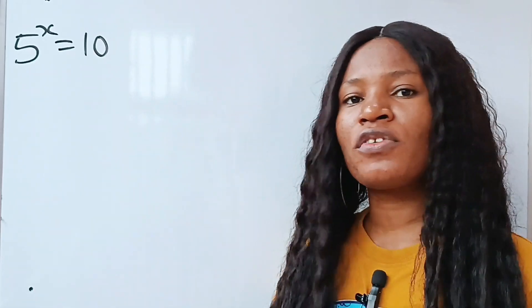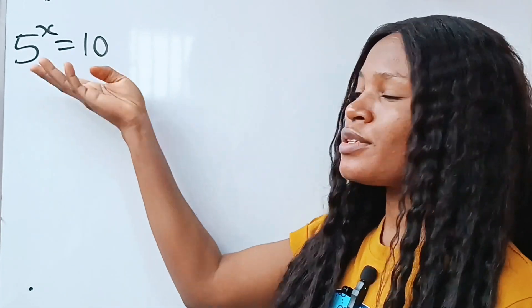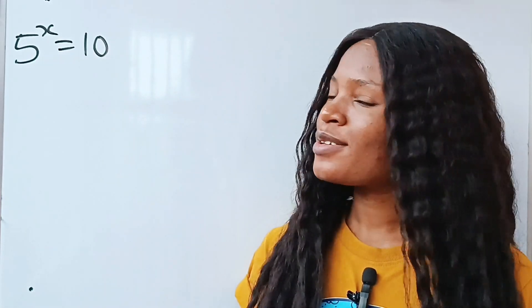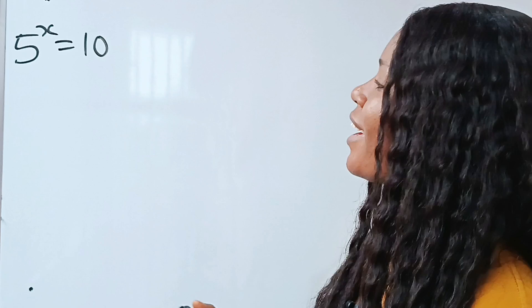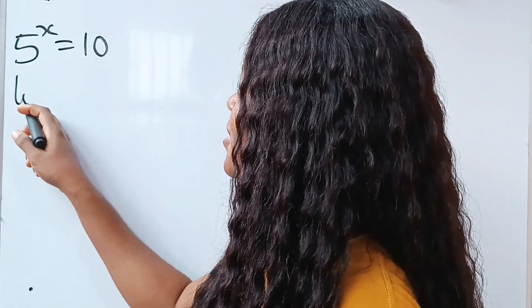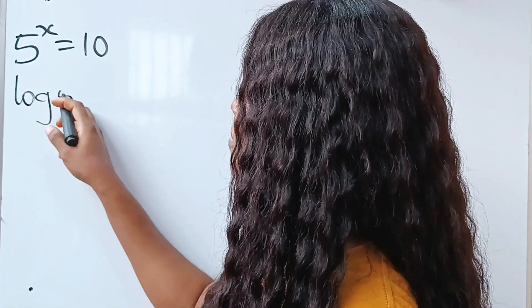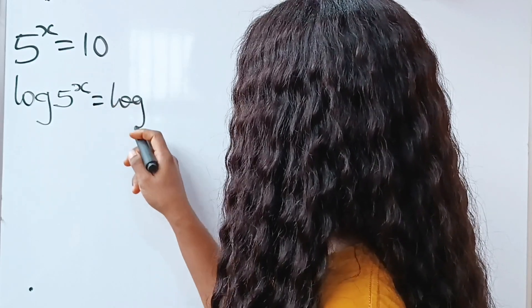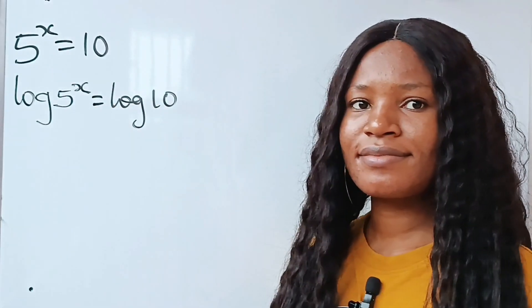So, it's very obvious. There is nothing we can do here except to introduce a log reading. So let's go straight and do that without wasting any time. We are going to introduce log: log 5 to the power of x is equal to log 10.